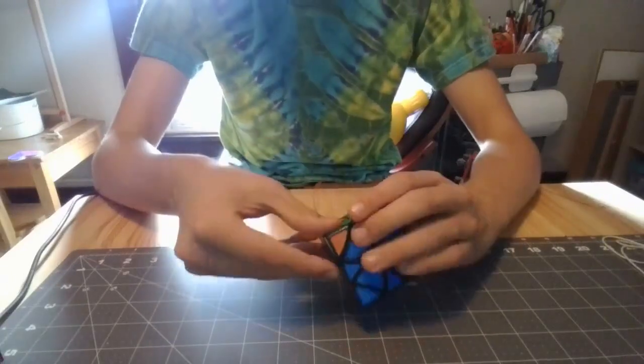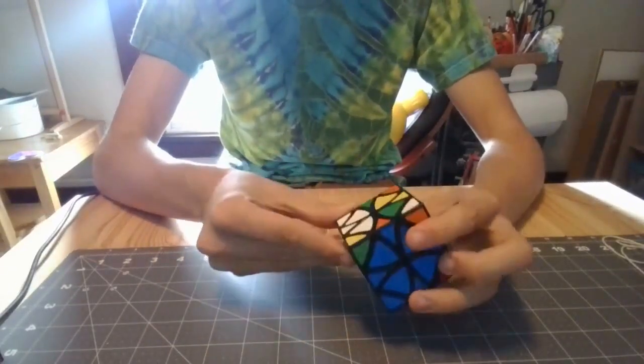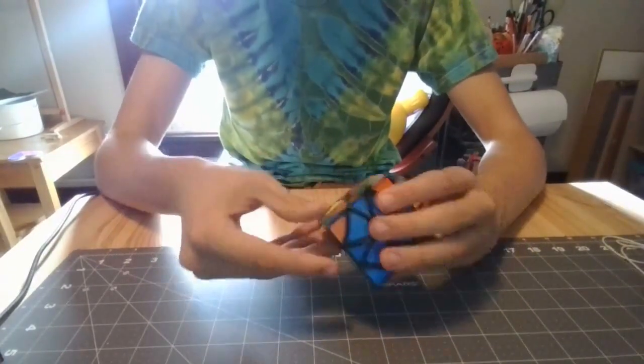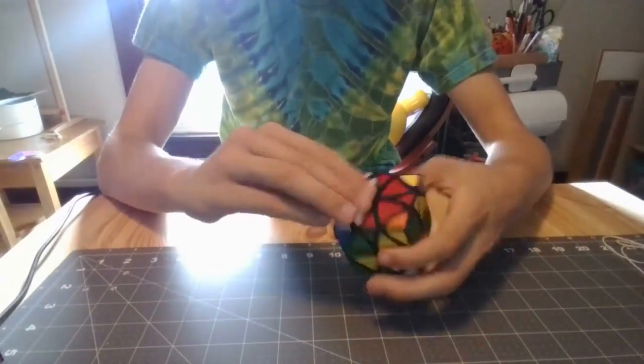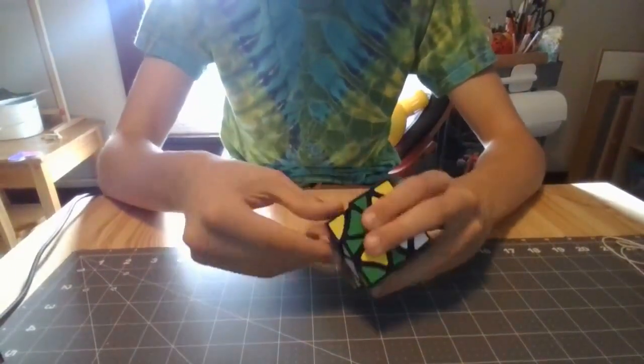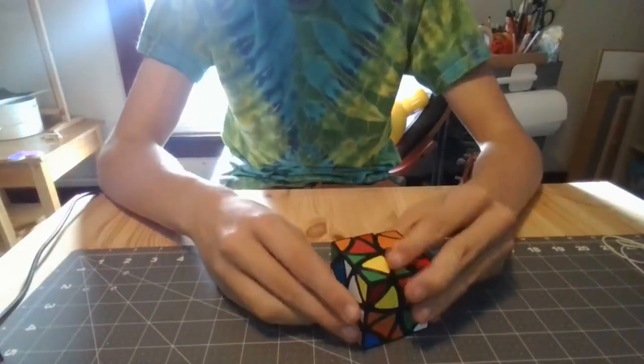It's probably the strangest cube that I own now because it turns on the edges instead of on the faces. And it can shapeshift in two different ways and some of the algorithms require you to jumble.